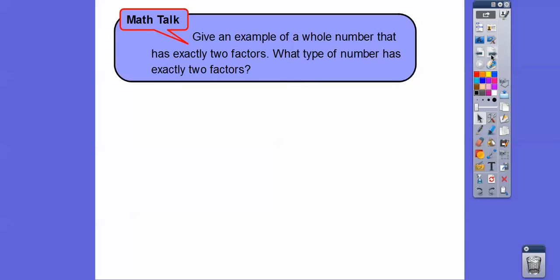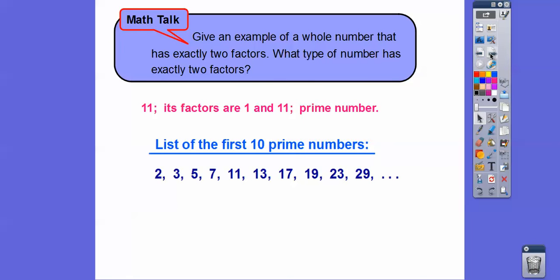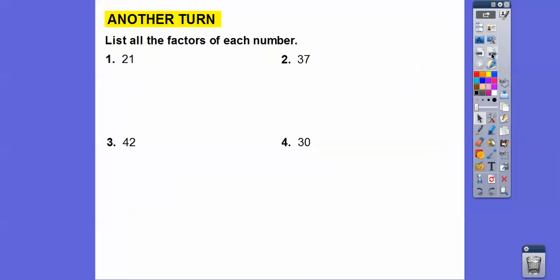Give an example of a whole number that has exactly two factors. What type of number has exactly two factors? It's called prime. So 11 is an example — only 1 and 11 multiply to get 11. Here are the first 10 prime numbers. 2 is the first prime number. People often think 1 is prime, but 1 only has one factor. Prime numbers always have exactly two factors, so 1 times 2, 1 times 3, 1 times 29 — those are all prime. There are infinitely many prime numbers.